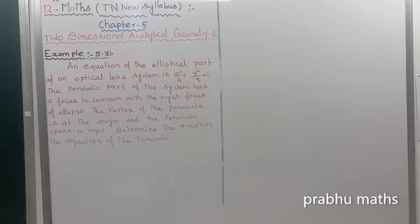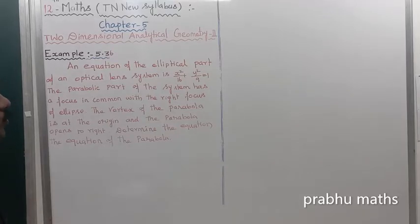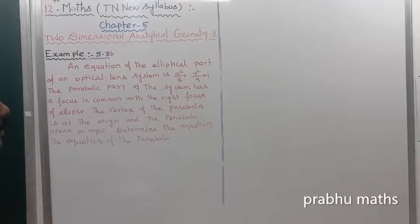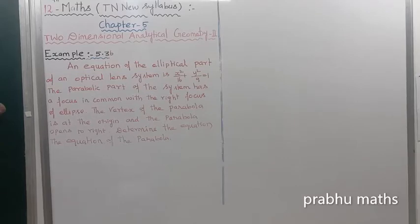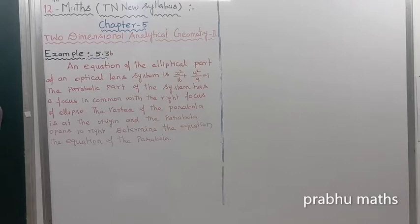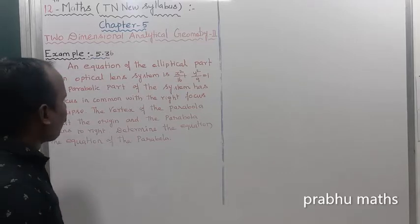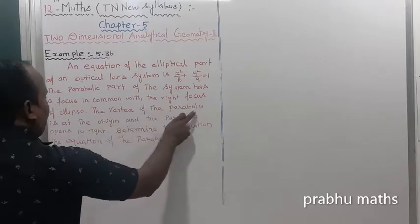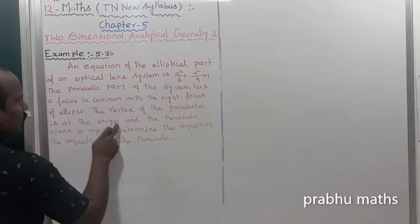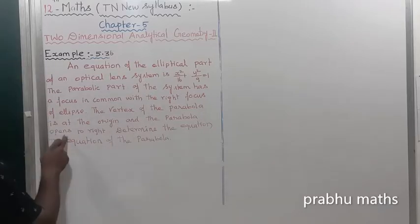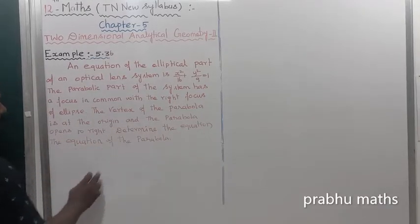Example 5.36: The equation of the elliptical part of the optical system is x² divided by a² plus y² divided by 9, equal to 1. The parabolic part of the system has a focus common with the right side focus of the ellipse. The vertex of the parabola is at the origin and the parabola opens to the right. Determine the equation of the parabola.